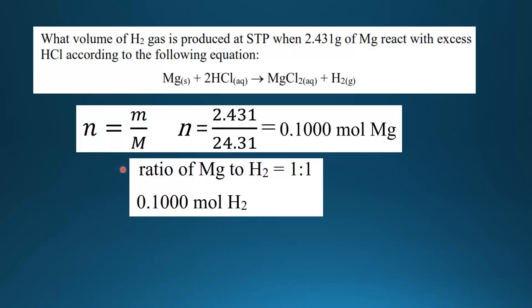Next we need to determine how many moles of hydrogen gas will be produced. We look at the ratio of magnesium to hydrogen. If we look at the balanced equation, it's a 1 to 1 ratio. Therefore, if we have 0.1000 moles of magnesium, that means we'll produce 0.1000 moles of hydrogen gas.